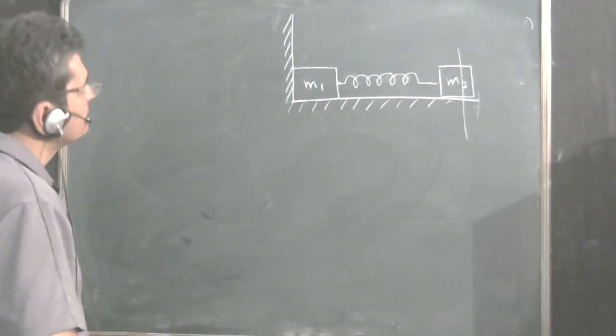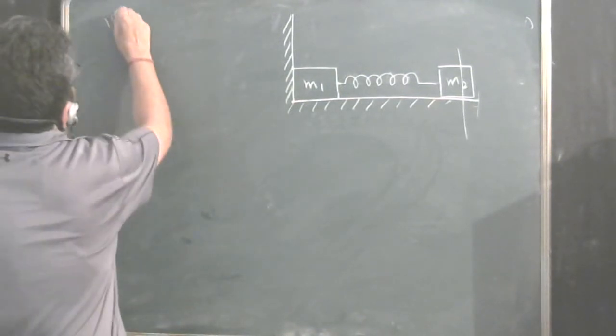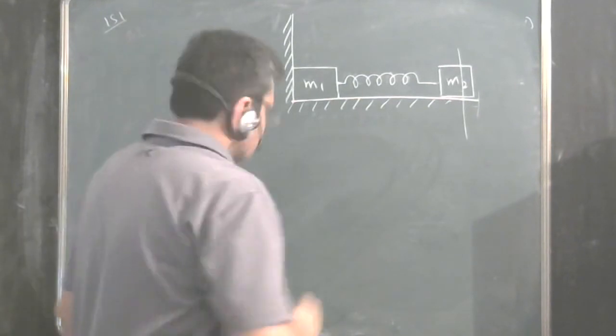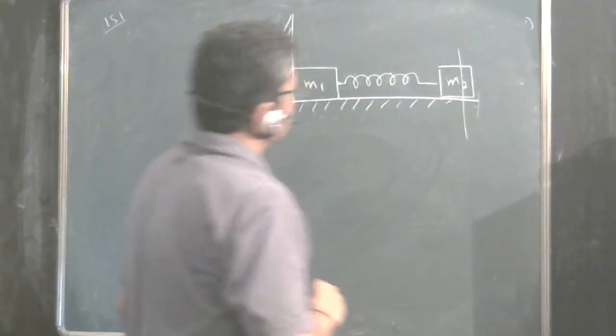We will solve a riddle problem 151. In this problem there are two masses M1 and M2. They are connected by a string.